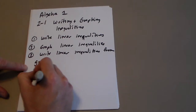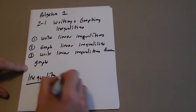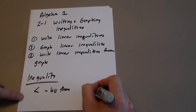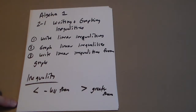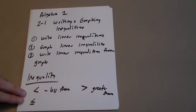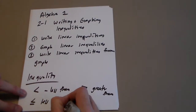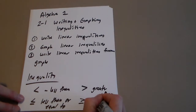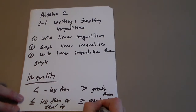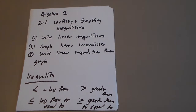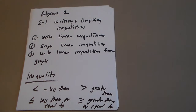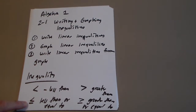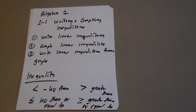So — inequalities. What is an inequality? There are four types. The first symbol is read as 'less than.' The next is read as 'greater than.' If we have a line underneath the less-than symbol, that's 'less than or equal to.' And if we have a line underneath the greater-than symbol, that's 'greater than or equal to.' When you see those symbols, that's how you identify them.